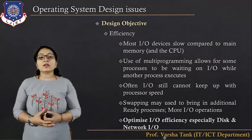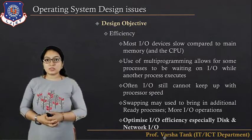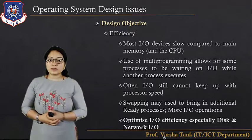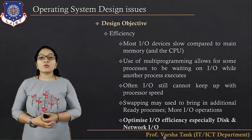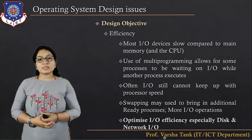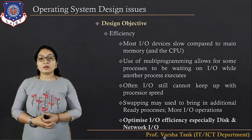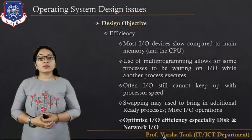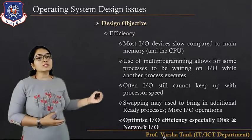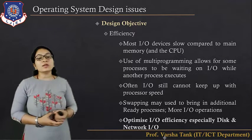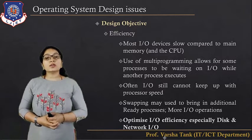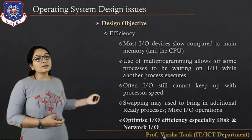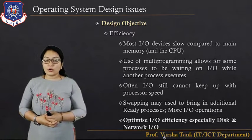IO modules cannot cope up with the processor speeds. Swapping may be used to bring in additional ready processes, which requires more input-output operations. This optimizes the IO efficiency, especially disk and network IO.